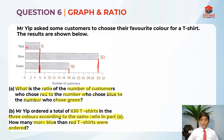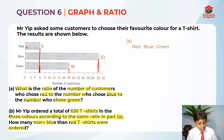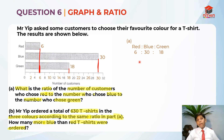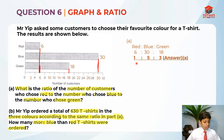Now that we have analysed the graph, let's solve part A. We need to use ratio: red to blue to green. We know the values are 6 to 30 to 18. But whenever we give our answer, we should always simplify it. So we simplify this ratio — it becomes 1 to 5 to 3.